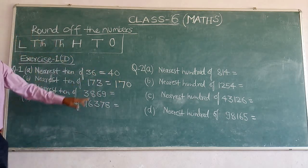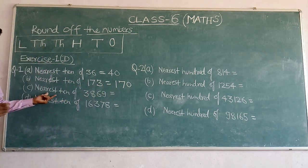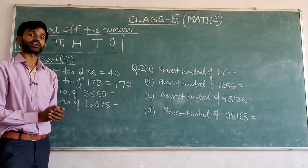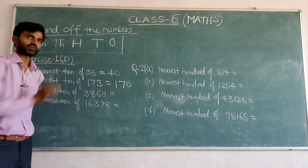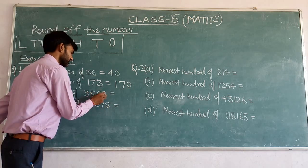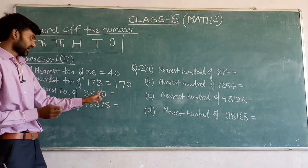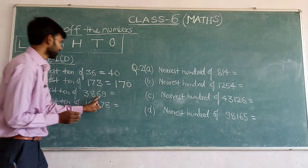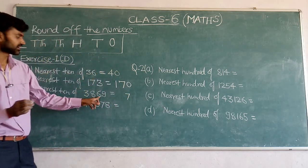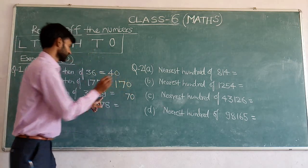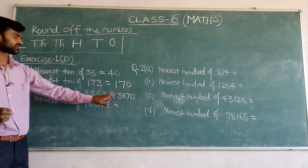Nearest ten of 3816: the tens place digit is 1. Check the ones place — it is 9, which is greater than 5. So increase the tens digit by 1: 1 increases to 2 — wait, the tens digit is 1, increased by 1 gives 2. So replace the ones digit by 0 and keep the other digits 3 and 8. The nearest ten of 3816 is 3820.